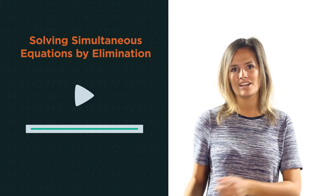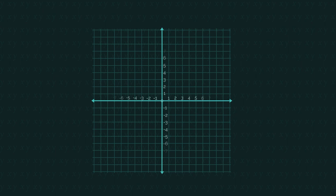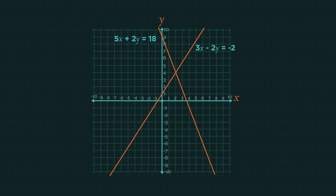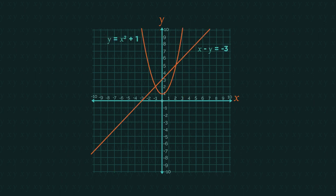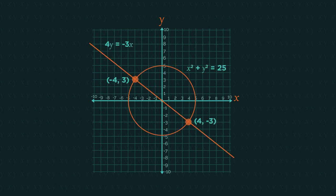When we solve simultaneous equations we may get one solution, like with these linear equations at two four, or if a quadratic is involved we may get two solutions: negative one two and two five. And we might also get two solutions with a straight line and a circle.